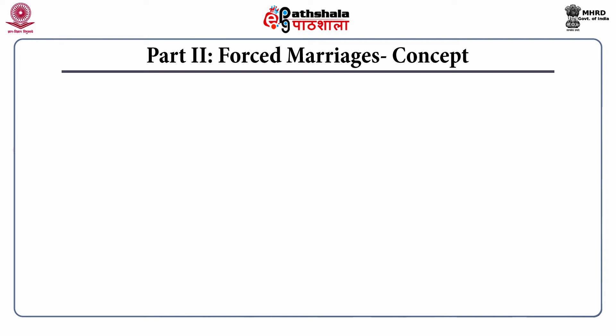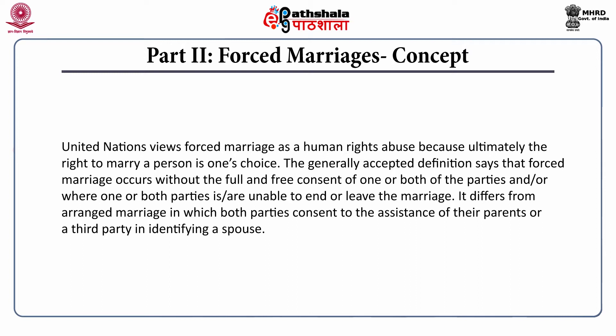Part 2 focuses on forced marriages. The United Nations views forced marriage as a human rights abuse because ultimately the right to marry is one's own choice. The generally accepted definition says that forced marriage occurs without the full and free consent of one or both parties, and/or where one or both parties are unable to end or leave the marriage. It differs from arranged marriage, in which both parties consent to the assistance of their parents or a third party in identifying a spouse.